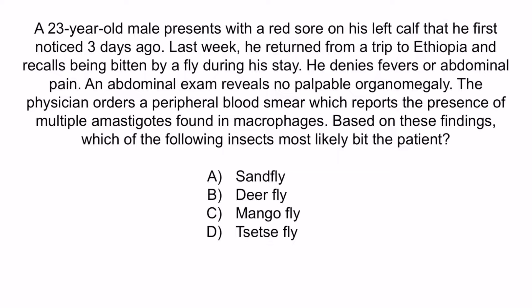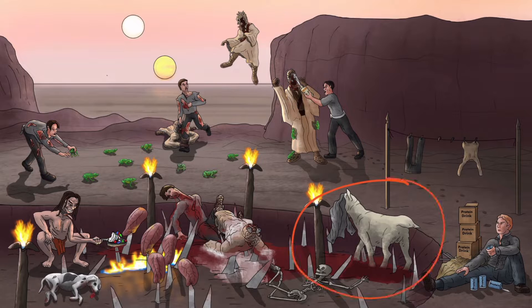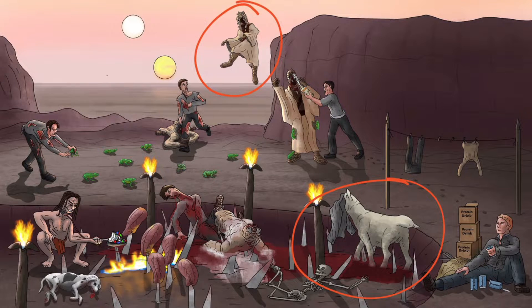This patient was bitten by a fly in a foreign country and developed a red sore afterwards — this is very nonspecific. The best clue is the blood smear showing amastigotes within macrophages, which should make you think of Leishmania donovani. The fly that transmits this parasite is choice A, the sandfly. Remember: the masked goat running around on blood helps you remember amastigotes on blood smear, and the sand person flying through the air represents the sandfly, which transmits this disease.